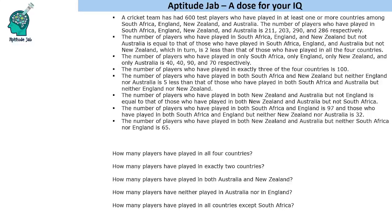Hello everyone, welcome to Aptitude Jab. This is a set based on a 4-set Venn diagram. It says that a cricket team has 600 test players who have played in at least one or more countries among South Africa, England, New Zealand and Australia. We are given information about the number of players who have played in different countries.